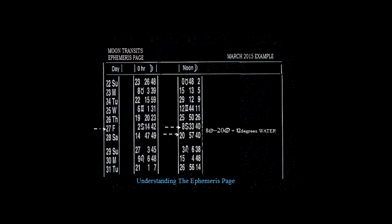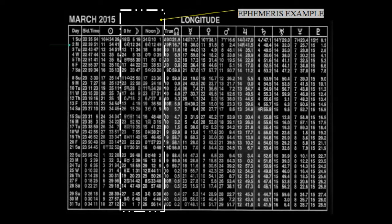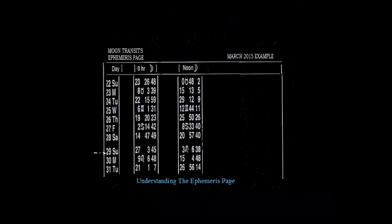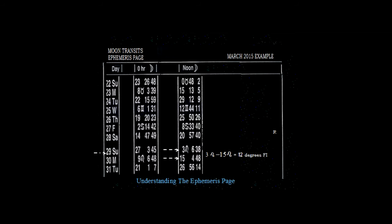Now our next reference to the noon moon example as it transits through all of the signs: we enter Leo at 3 degrees Leo, compared to the next day which is the 30th at 15 degrees Leo. So we subtract 3 degrees Leo from 15 degrees Leo and we have 12 degrees of daily motion of the moon transiting from one day to the next. That element, Leo, is fire. Remember the trinity of fire: Aries, Leo, and Sagittarius.